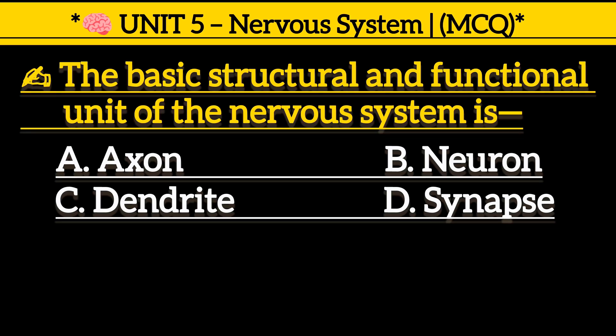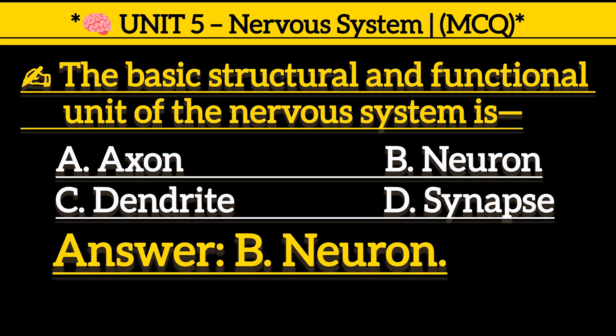The basic structural and functional unit of the nervous system is: Option A, axon. Option B, neuron. Option C, dendrite. Option D, synapse. Correct answer is Option B, neuron.